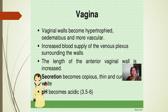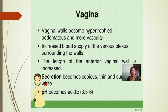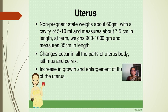Regarding the vagina: the vaginal walls become hypertrophied, edematous, and more vascular, with increased blood supply from the venous plexus surrounding the walls. The length of the anterior vaginal wall increases. Secretions become copious, thin, and curdy white. The pH becomes acidic, usually 3.5 to 6, though some references cite 4.5 to 6.